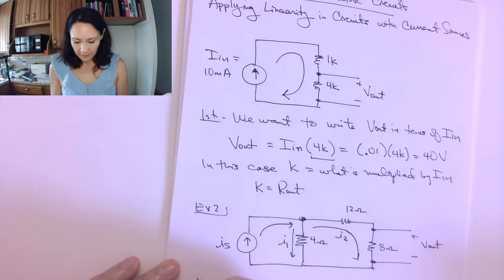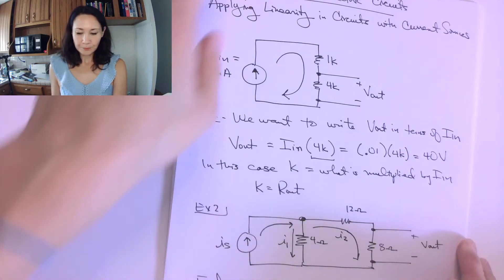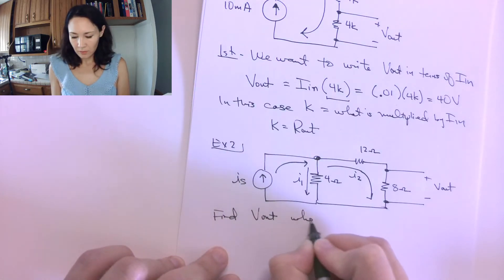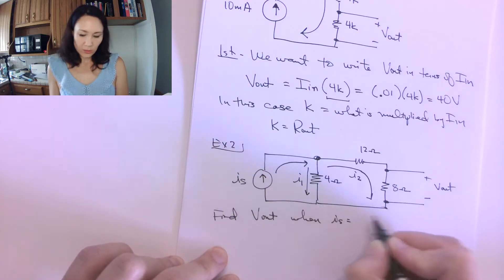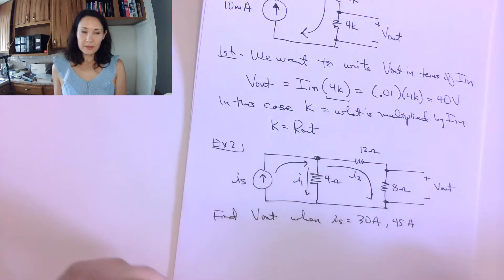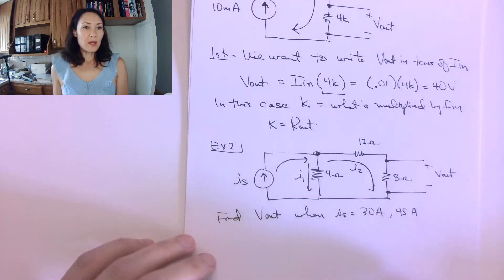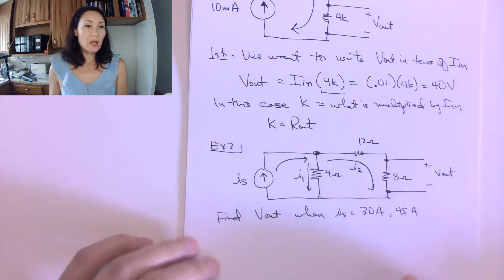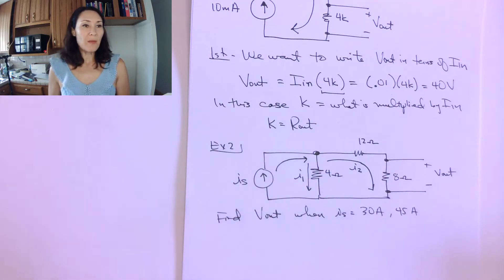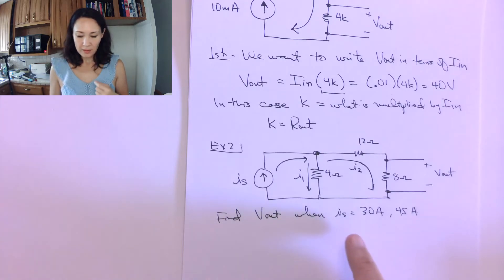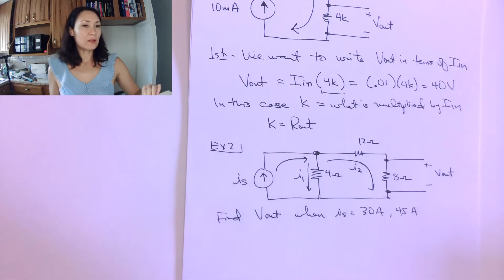We might be asked to find Vout when IS is 30 amps and also 45 amps. If we don't use linearity, for every value of source current we have to solve the entire circuit again. If we do use linearity, we come up with a formula unique to this circuit that we can reuse over and over for different input source currents.